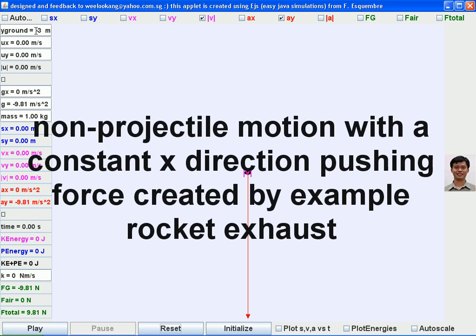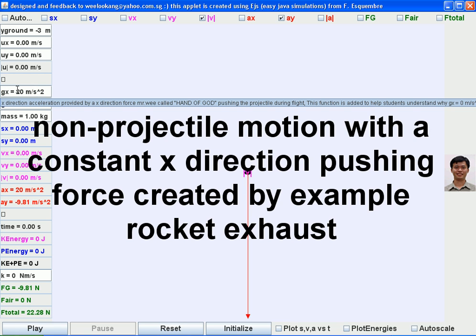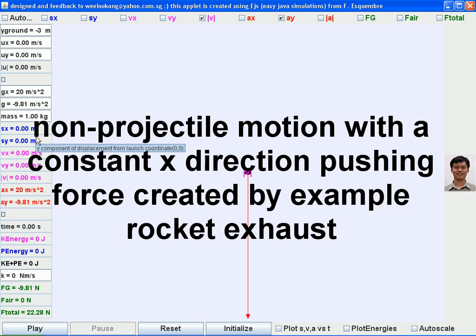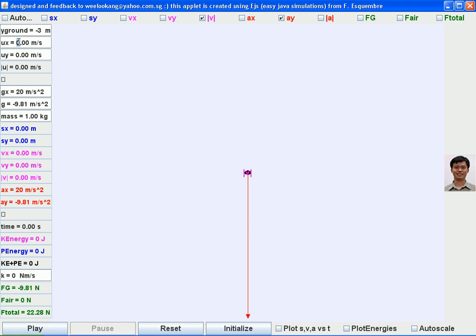Now we are going to use this same applet to explore something called acceleration in x direction, let's say equal to 20. Then make the initial speed 10, 5 for example.